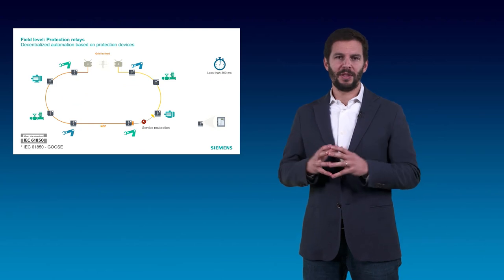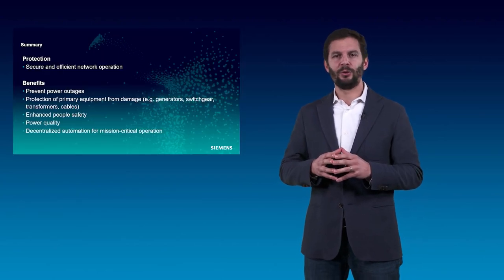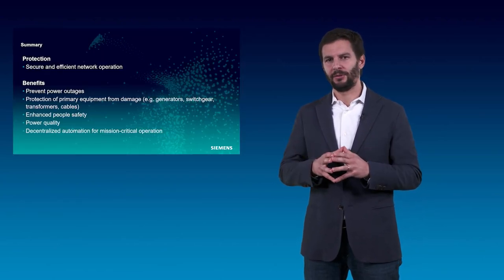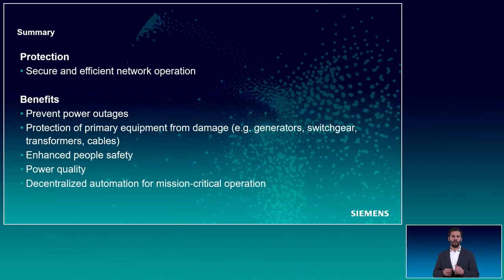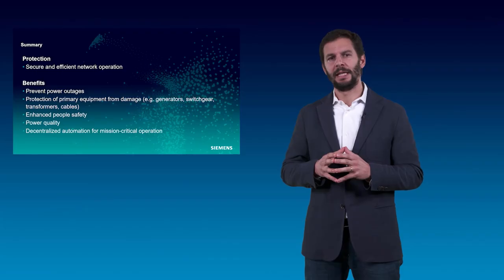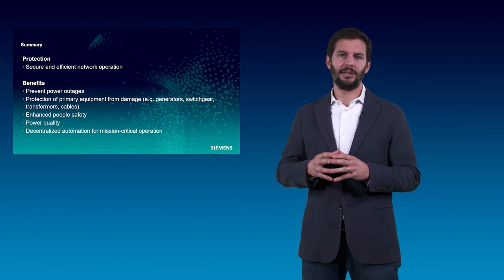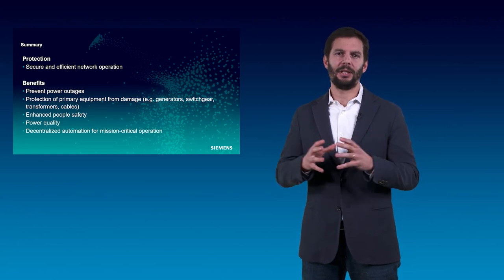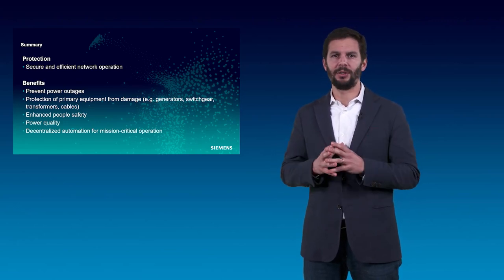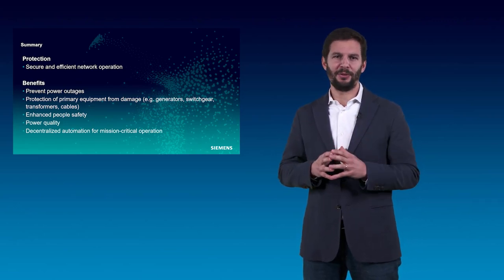As my presentation is coming to an end, I would like to briefly highlight the main points of our session today. Protection is a key element of the electrical system of an industrial plant. It prevents power outages, protects people and assets from damage, supports power quality for improved operation and system stability, and it can also be used to deploy decentralized system architectures for mission-critical operation. Thank you very much for your attention.